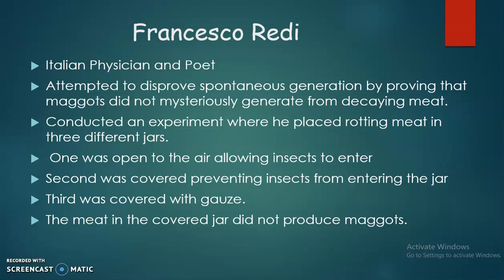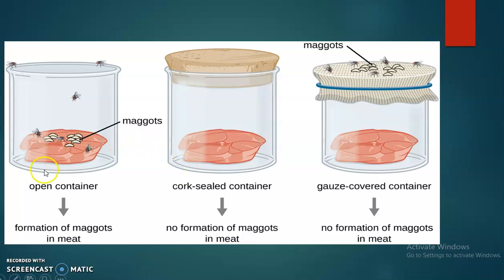He took three containers. The first container was kept open, one was cork sealed, and the other was covered with gauze. He observed that maggots developed on the meat surface of the open container. There was no maggot formation in the cork-sealed container. In the third container, maggots appeared on top of the gauze but not inside. Thus he concluded that decaying meat is not capable of producing life.